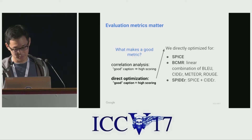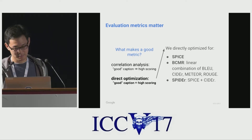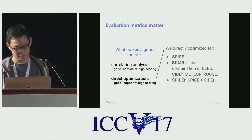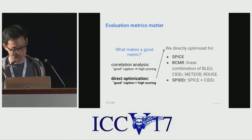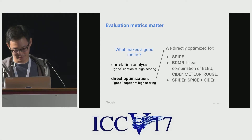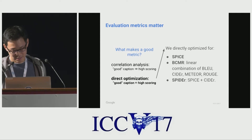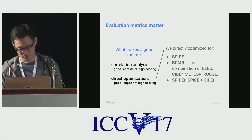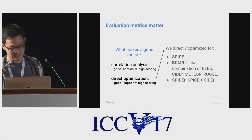We look at three metrics in particular: SPICE by itself, which is purely semantic; BCMR, which is a combination of syntactic metrics that was also used for the COCO evaluation at the time of this work; and SPYR, which captures both semantic and syntactic aspects of captions.